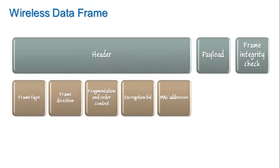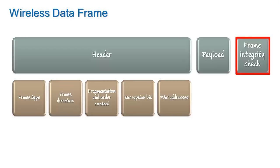After the frame header, the next major part of the wireless data frame is the frame payload — the actual data being communicated between the client and the wireless access point. Wi-Fi data frames contain between 0 and 2304 bytes of payload data. Finally, the third major part is the frame check sequence, which is used to verify the integrity of the frame and ensure that the data frame was not modified or corrupted while in transit. The check sequence is commonly some variety of cyclic redundancy check, or CRC, value.